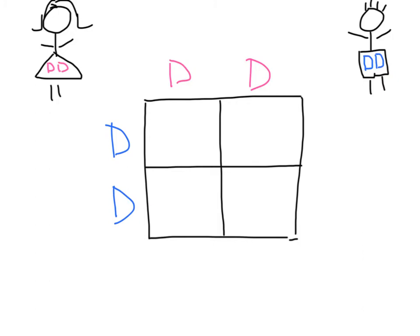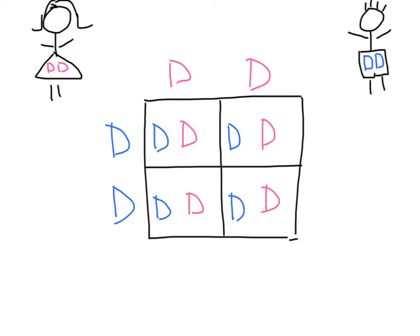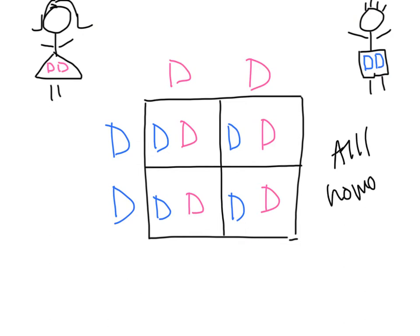We could do it by math, but why would we want to? You bring this over, this over, this over, this over — all the possible ways these alleles could get together. These come down. So if this egg and this sperm at that fertilization event got together, we'd get this kid. And all of them are homozygous dominant — it's all they can be. That's all the parents have, that's all they can give away to the kids. A simple Punnett square.